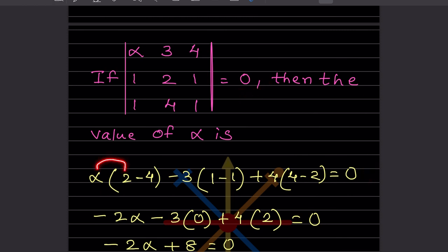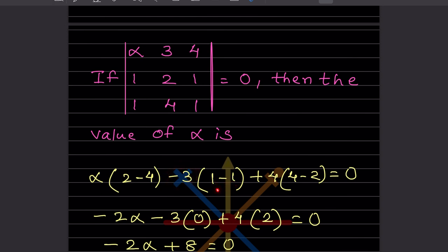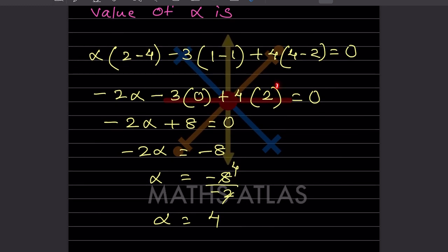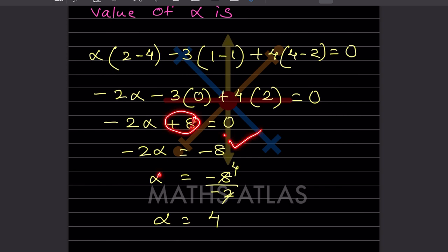Now expanding: 2 minus 4 gives minus 2, and this is multiplied by alpha, so we get minus 2 alpha. The term with 3: 1 minus 1 is 0, so minus 3 times 0 is 0. The term with 4: 4 minus 2 is 2, so 4 into 2 gives 8. Setting the whole expression equal to zero: minus 2 alpha plus 8 equals 0. Taking 8 to the other side gives minus 2 alpha equals minus 8, so alpha equals minus 8 divided by minus 2, which gives alpha equals 4.